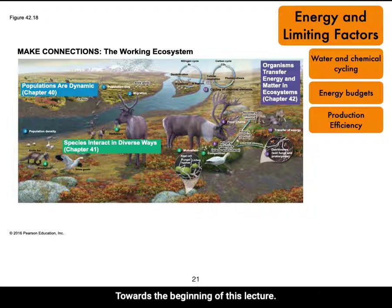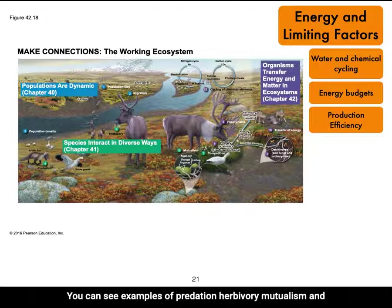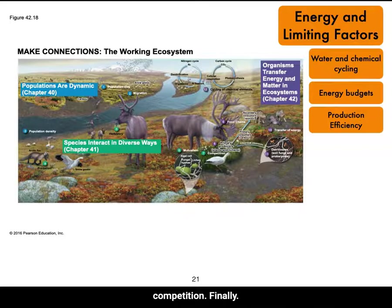Towards the beginning of this lecture, we covered the various ways species interact with each other. In this image, you can see examples of predation, herbivory, mutualism, and competition.